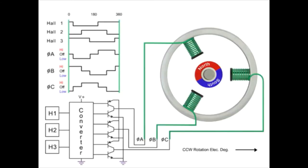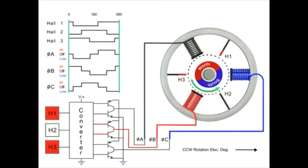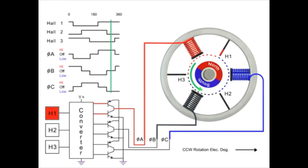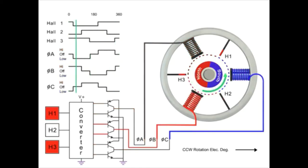The sequence is further explained here when the Hall effect sensors turn on. Coils are energized by the converter. The coils alternate in order, creating the magnetic field to turn the rotor. The sequence is repeated with the next set of Hall effect sensors and coils to continue rotation.